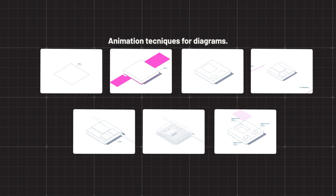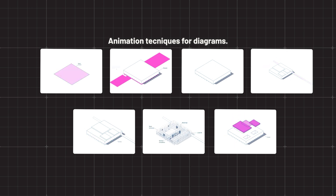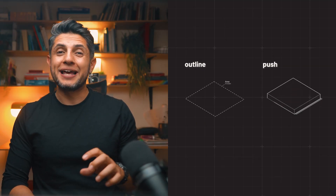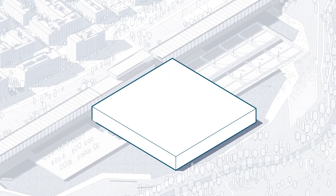In order to make this animation, I need to master a couple of animation techniques that will explain different parts of the process. I'll show you how to create two first: the outline and the push. This is the staple move you need to learn to explain basic concepts. We will use these two moves to show the perimeter and area of our site, and show how a main volume extrudes from that area.